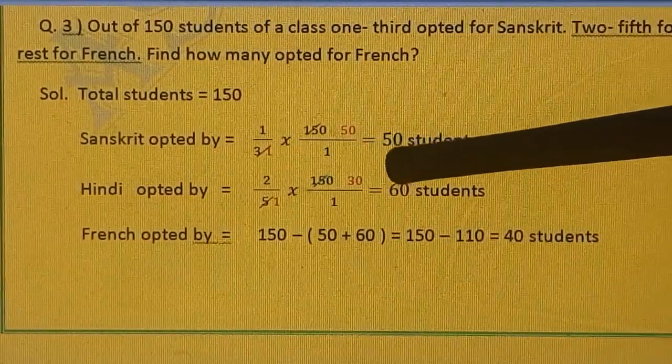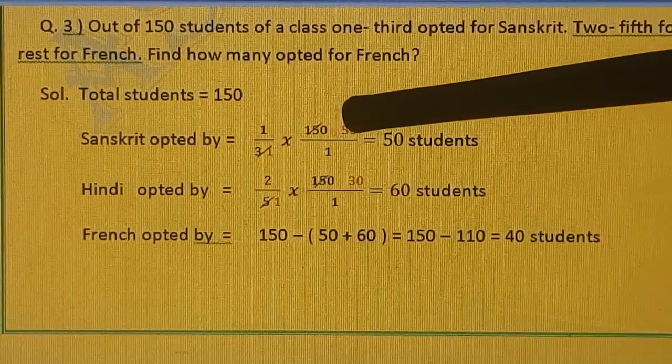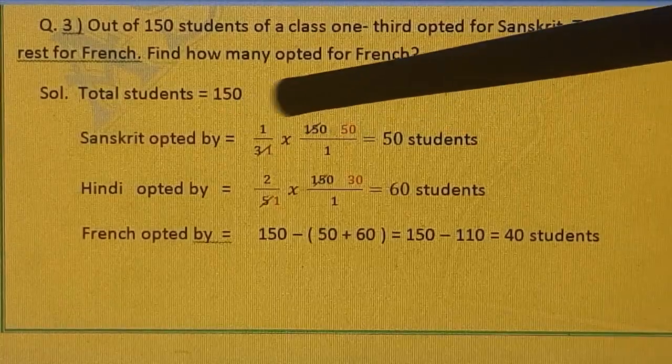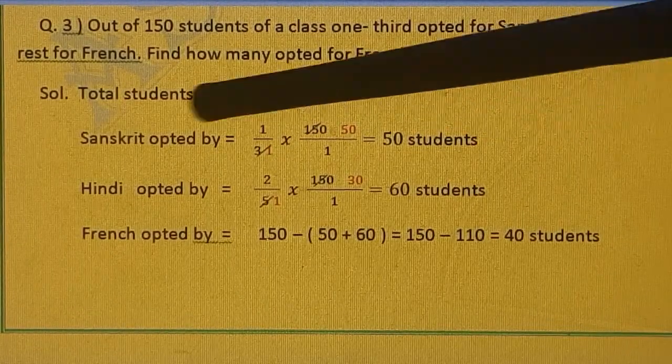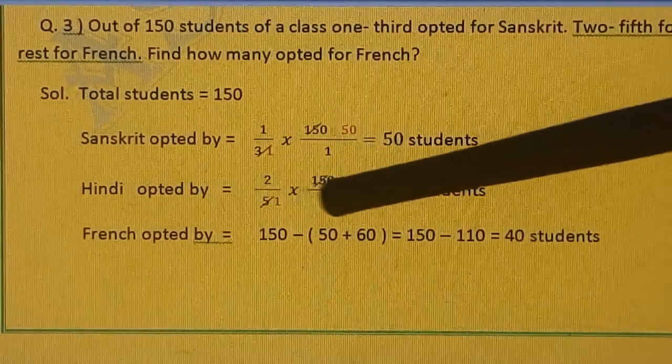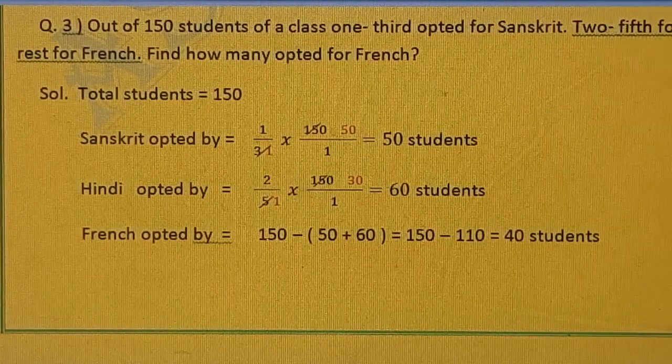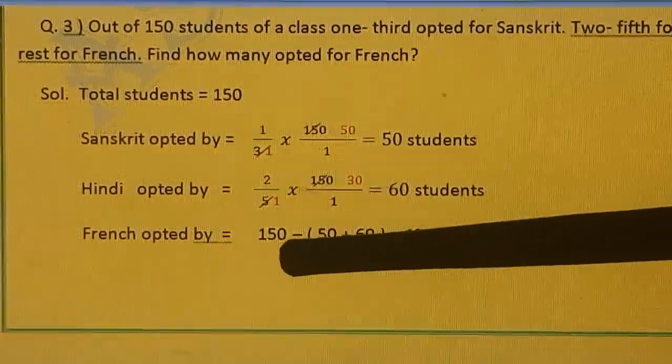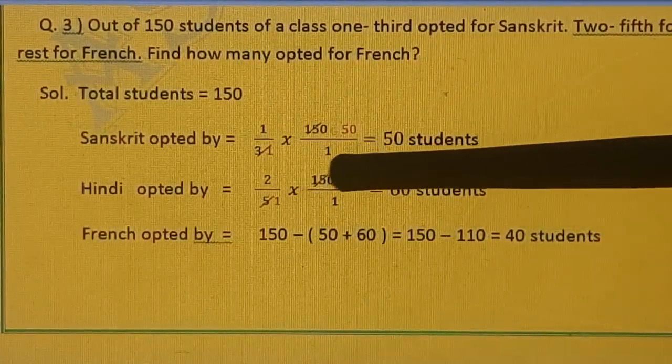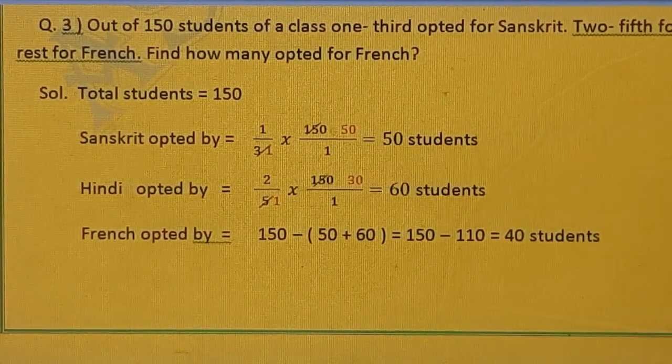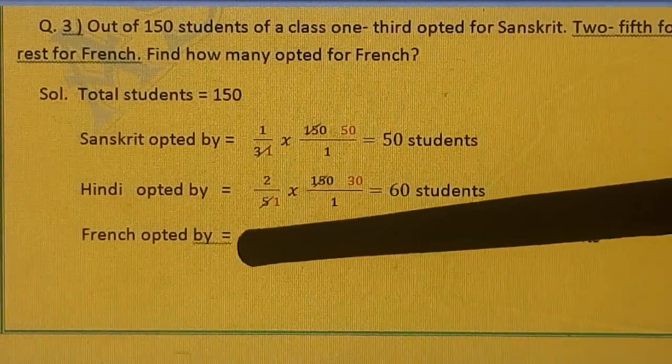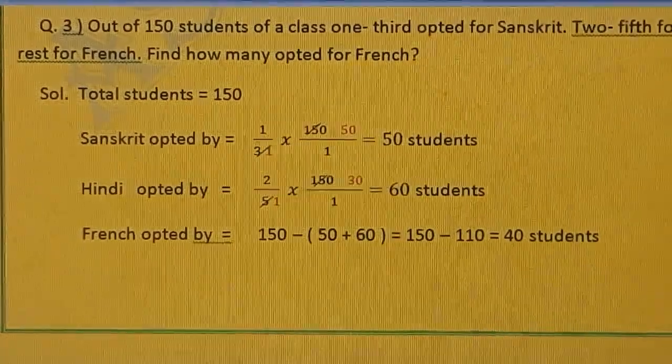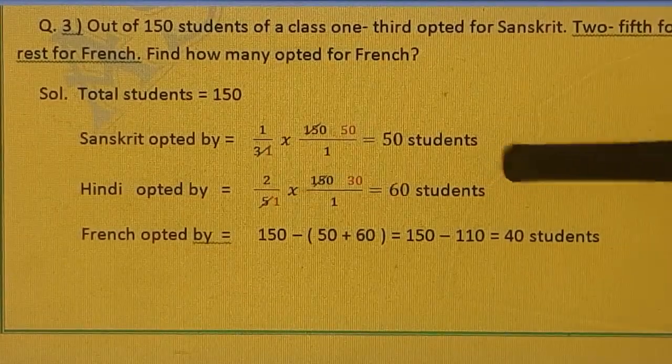Here it is done one third. That is 1 upon 3 of 150. So 1 upon 3 multiply 150. 3 ones are 3, 3 fives are 15, 0 will be written to the right side. So 50 students opted for Sanskrit. Hindi opted by 2 fifth. That is 2 upon 5 multiply by 150. 5 ones are 5, 5 threes are 15, and 0 is there. So 0 will be written to the right side. 151 divided by 5 will give you the answer 30. 32s are 60. 60 students are there who opted Hindi.